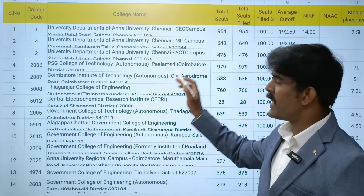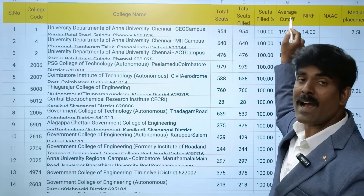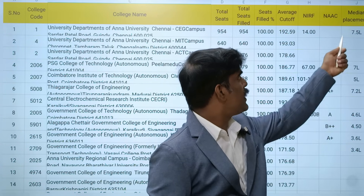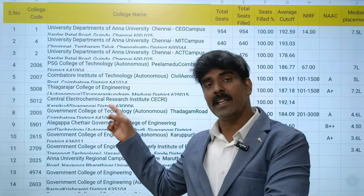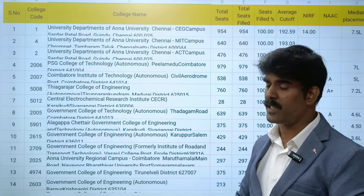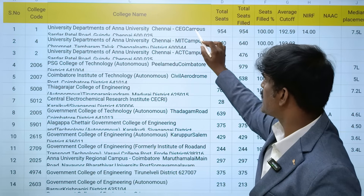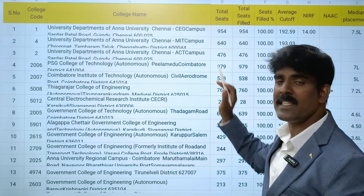The first one is the CEG Campus of Anna University. Looking at last year's seats filled, average cutoff, NIRF ranking, NAAC grade, and median placement. Anna University's CEG, MIT, and ACT campuses are top. The NIRF ranking is 14th and they are consistently in the top 20. The median placement is 7.5 lakhs.